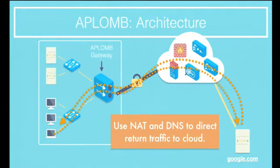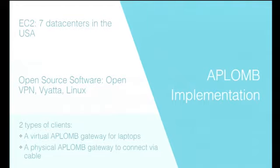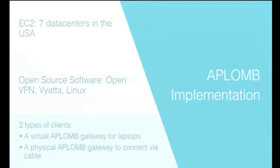There are a lot more details about how the redirection works, how we handle multiple data centers, and performance optimizations. We built APLOM and deployed it on seven EC2 data centers across the United States, using new code and open source code stitched together. We implemented two types of clients: a virtual APLOM gateway you could run on your local laptop to redirect just your traffic, and a physical software router that you could plug in for all the redirection.